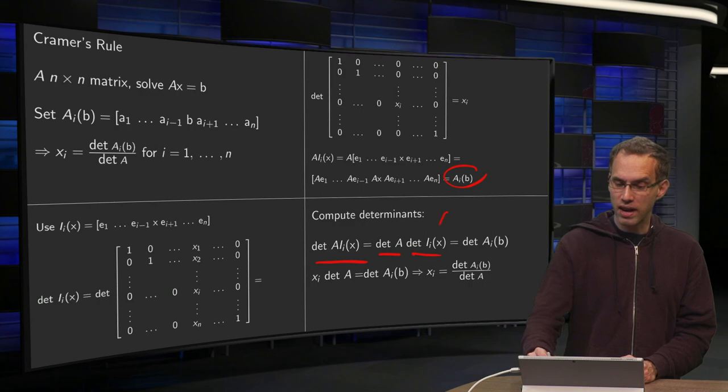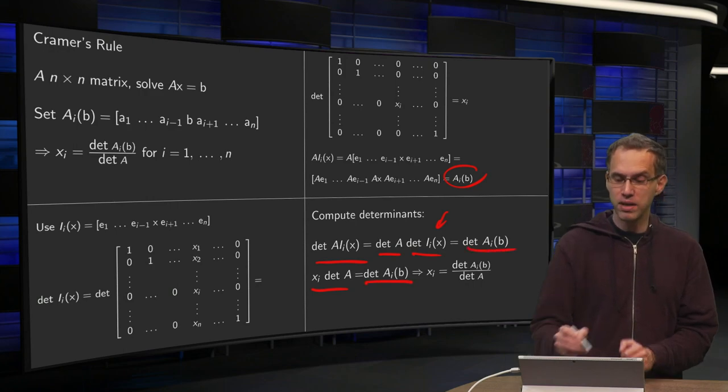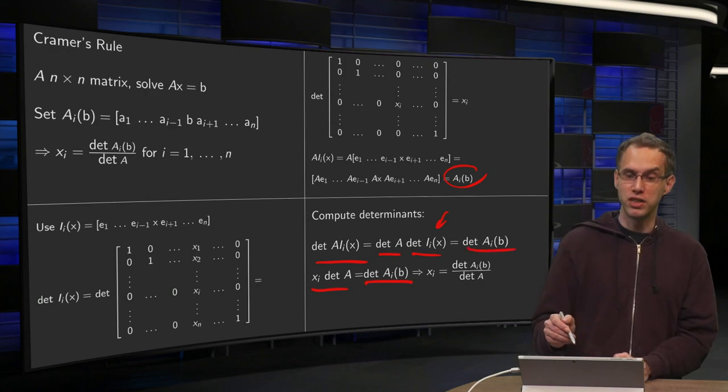The determinant of I_i(x) was x_i. So we have x_i times determinant of A equals determinant A_i(b) over here. And we can solve for x_i.